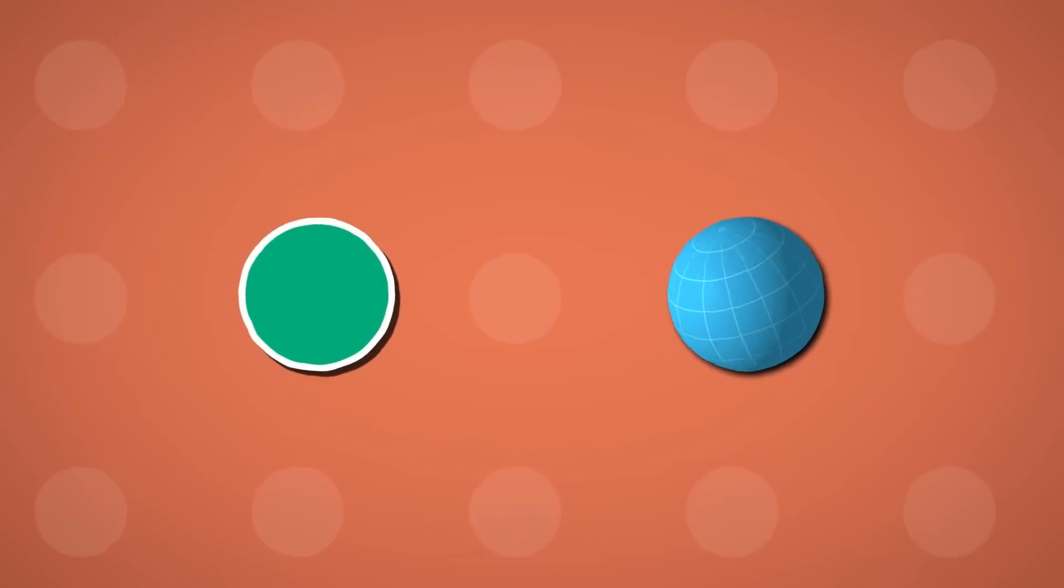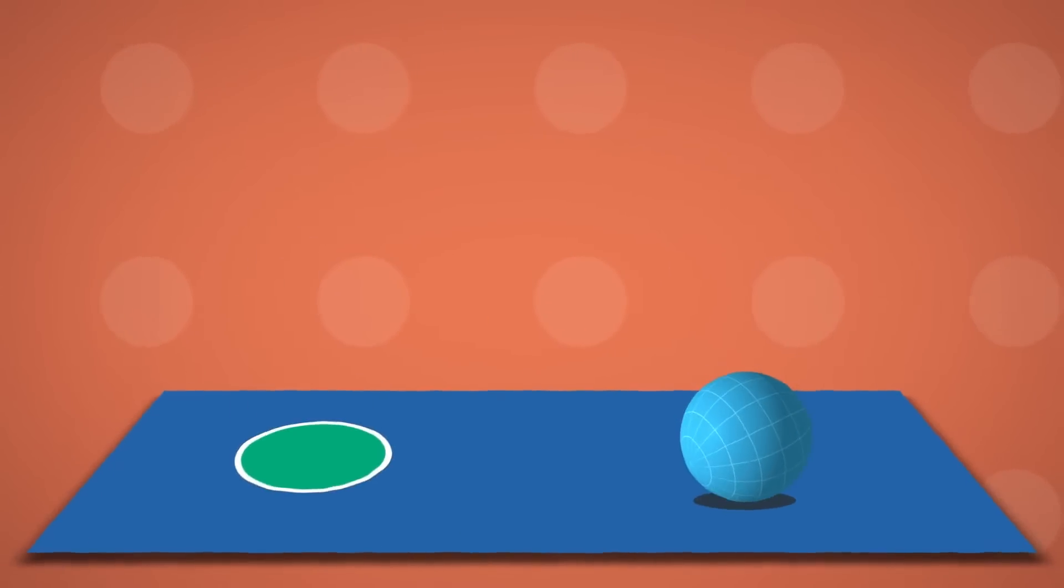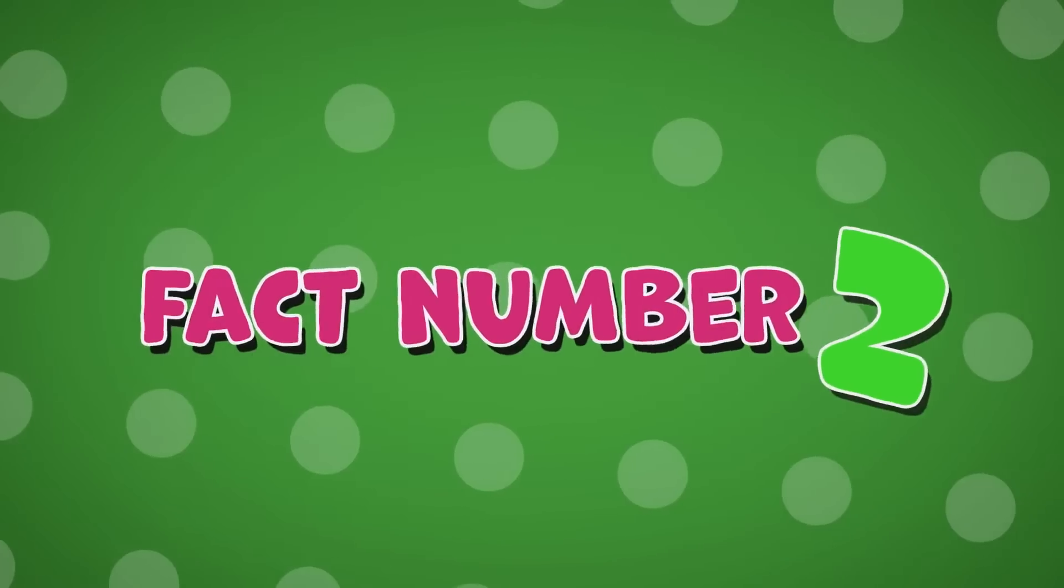A good way to know if it is 2D or 3D is to think about if you were to put it on the ground. Would it lay flat or would it roll away? Fact number two.